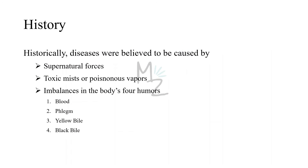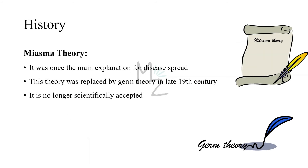Historically, diseases were believed to be caused by supernatural forces, toxic mist or poisonous vapors, and also imbalances in the body's four humors: blood, phlegm, yellow bile, and black bile. Miasma theory was once the main explanation for disease spread, but it was replaced by germ theory in the late 19th century and is no longer scientifically accepted.